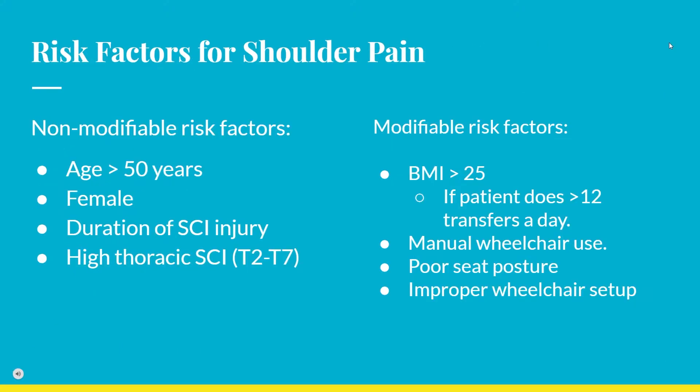Shoulder pain in patients with SCI reduces their independence and quality of life. For non-modifiable risk factors, literature showed that shoulder pain manifestation is highly correlated with age, specifically over 50 years old. Females had almost two times higher odds of having shoulder pain compared to males. High thoracic SCI patients have more chances of presenting shoulder pain, which may be explained by adaptation of trunk control during wheelchair propulsion, causing muscle strength imbalances between the shoulder adductors and abductors.